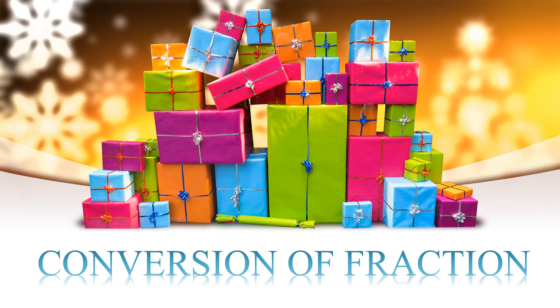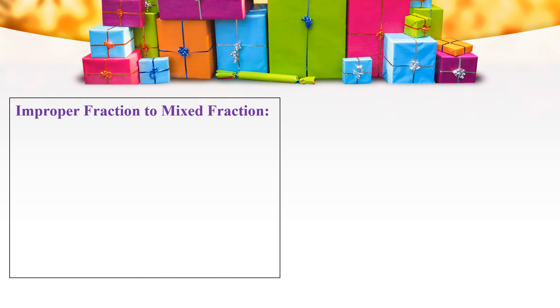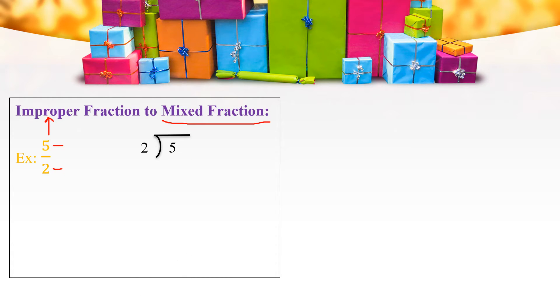Conversion of Fractions. An Improper Fraction can be written in terms of a Mixed Fraction. Let us see this with an example: 5 by 2. Here, 5 is the numerator and 2 is the denominator, and the numerator is greater than the denominator. Therefore, 5 by 2 is an Improper Fraction. Now we need to convert it into a Mixed Fraction. So, 5 by 2 can be written as 5 divided by 2. We know that 2 twos are 4.